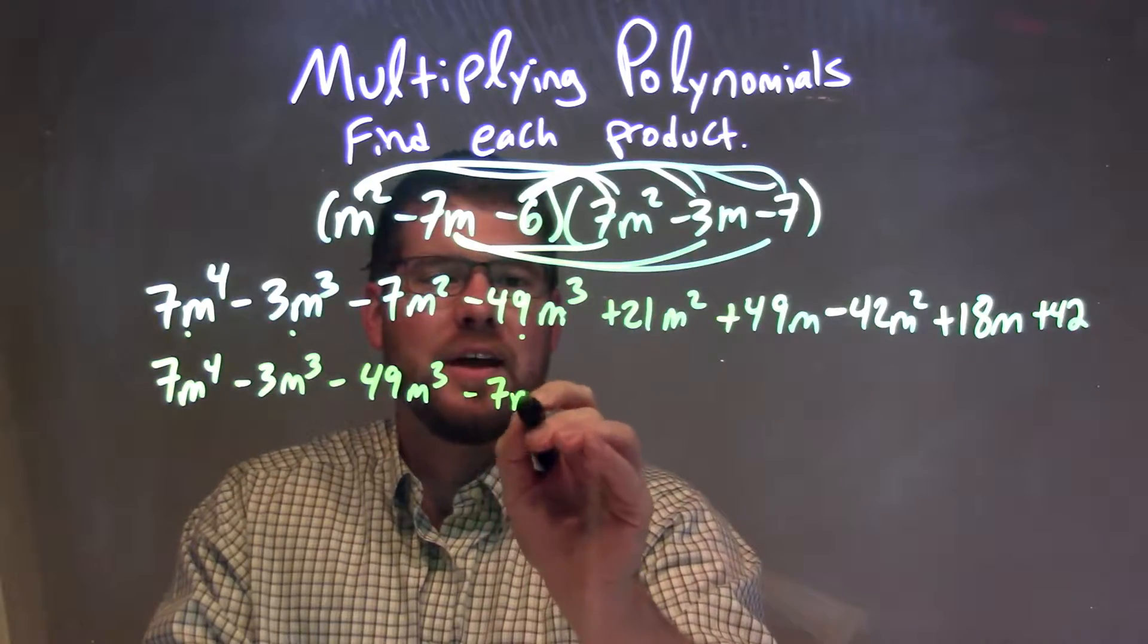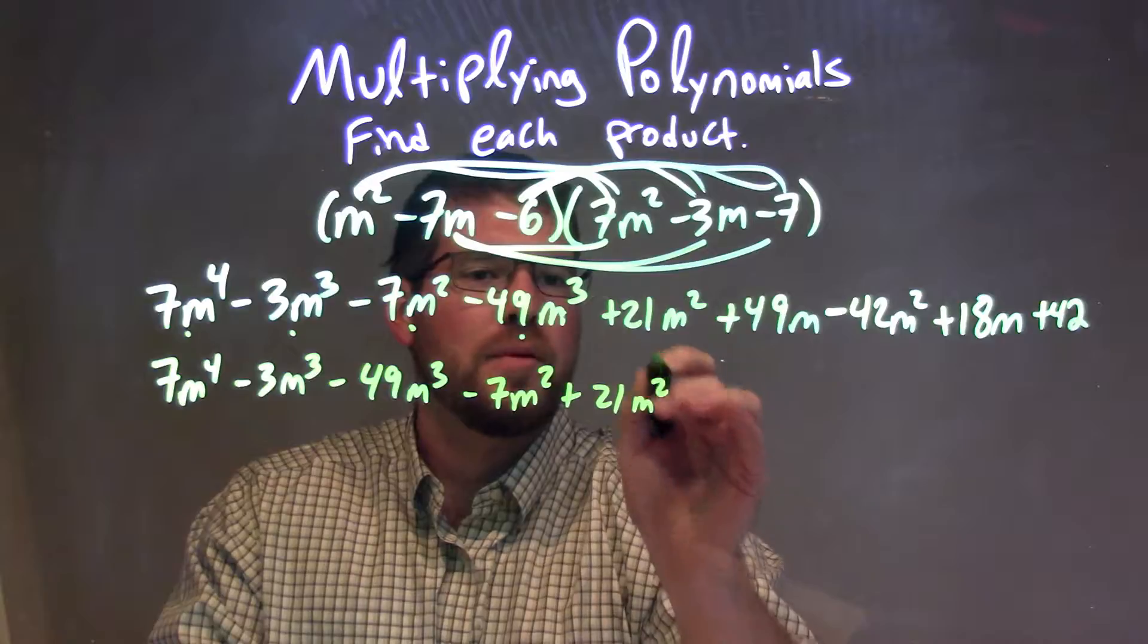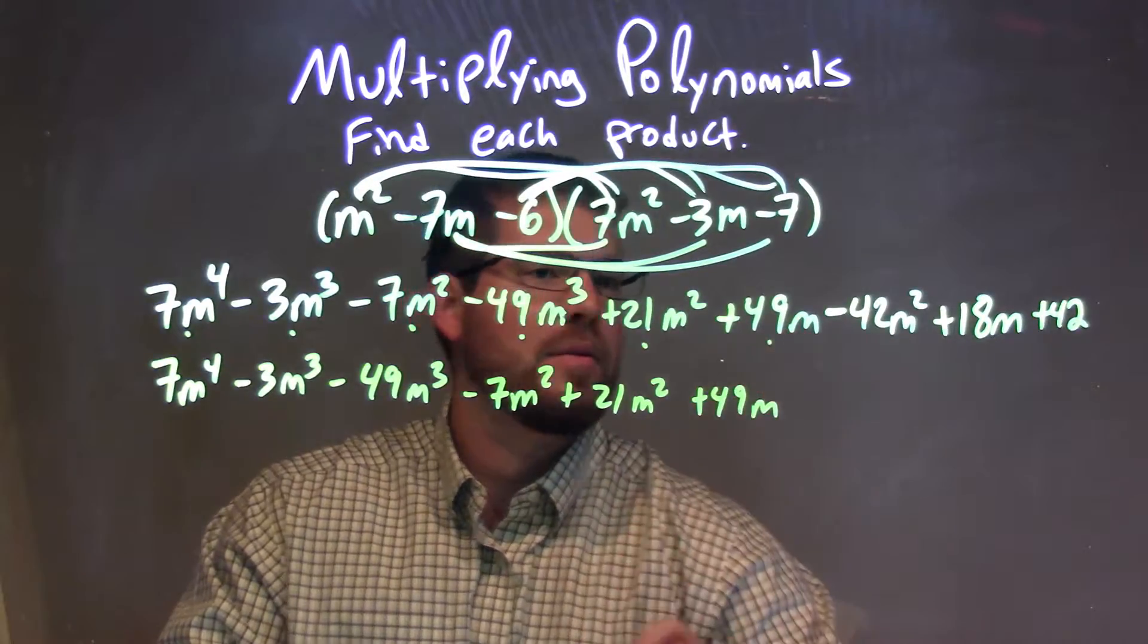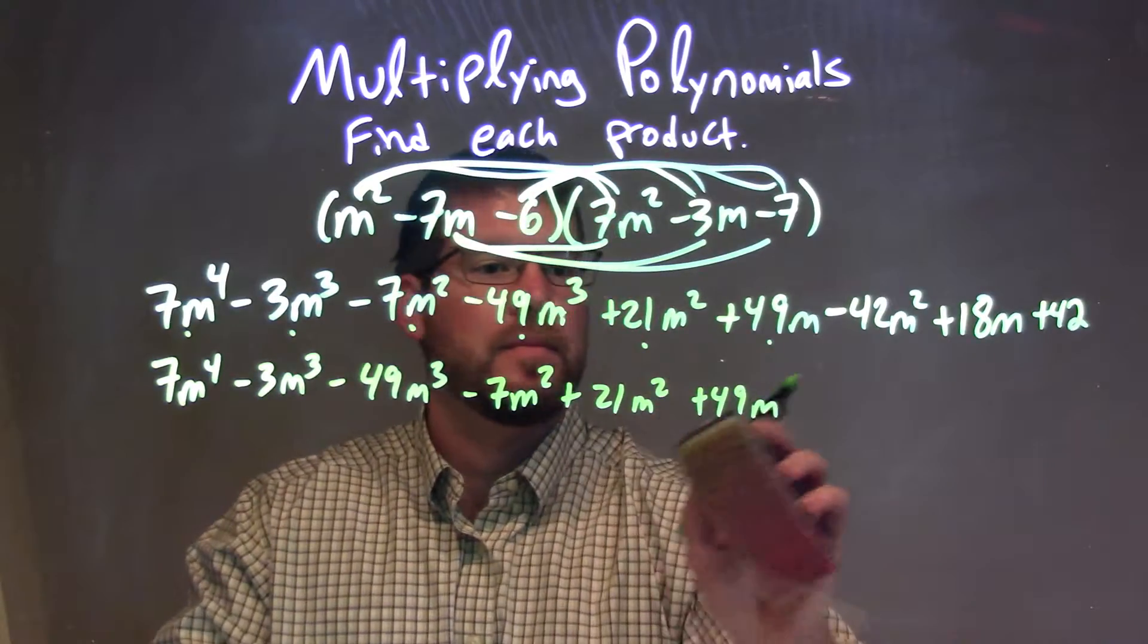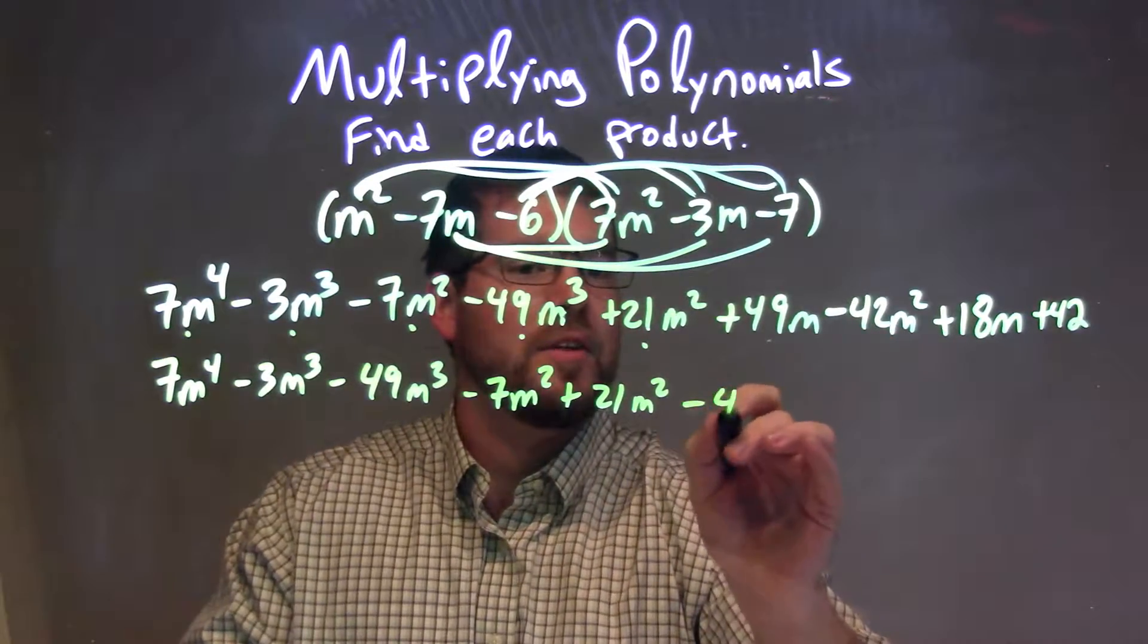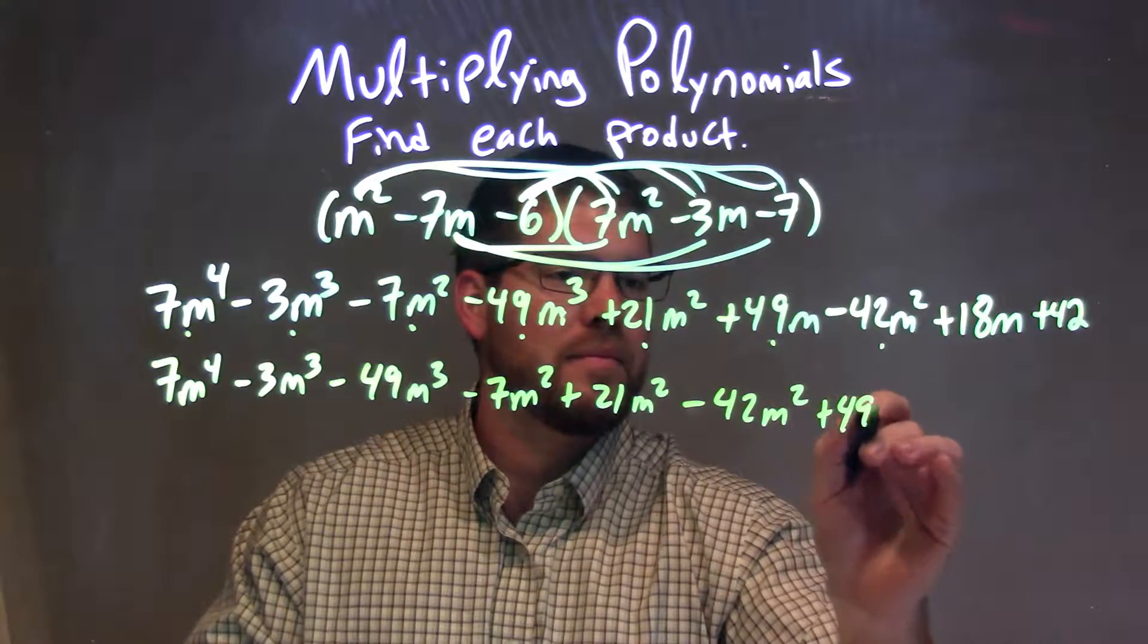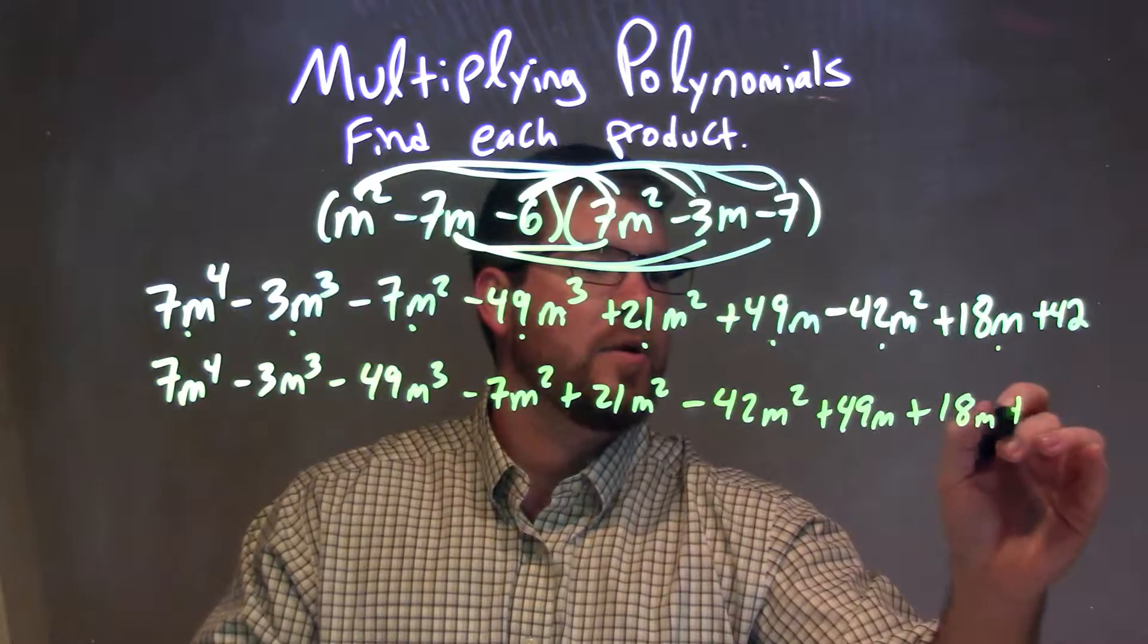Second power: minus 7m squared, plus 21m squared. Oh, and I forgot this m squared didn't I? Not the 49m. Whoops, got ahead of myself. Minus 42m squared. Now I can bring down the 49m and then the 18m and 42.